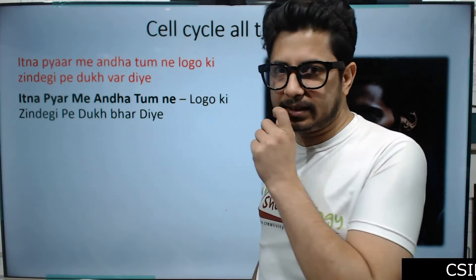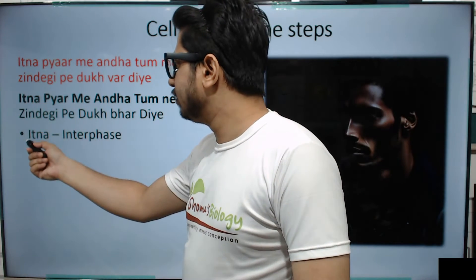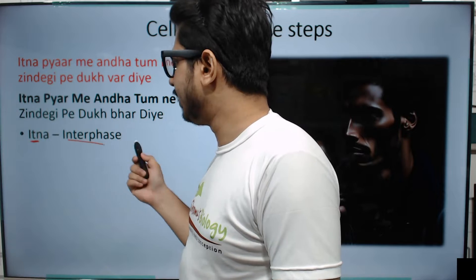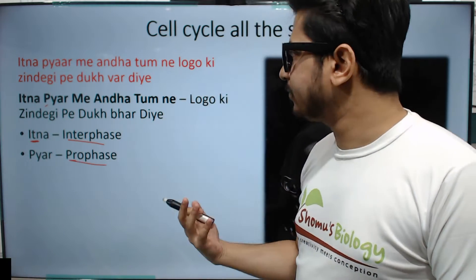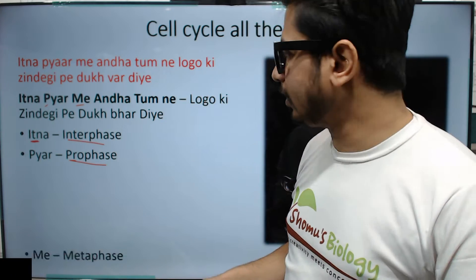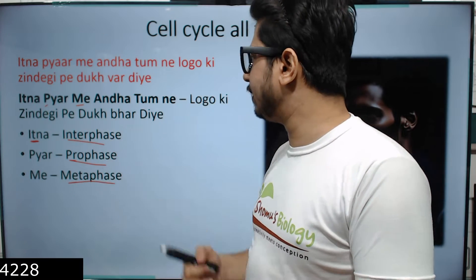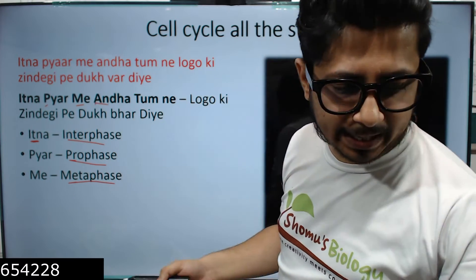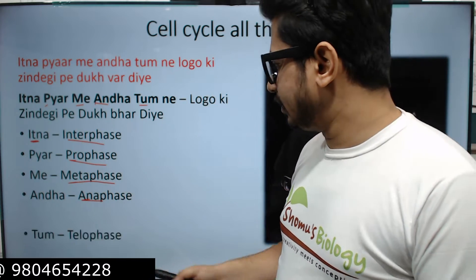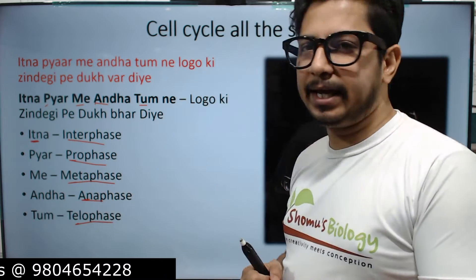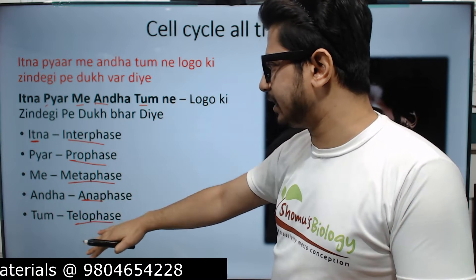The first section — 'Itna pyaar mein andha tunne': I for Interphase, P for Prophase, M-E for Metaphase, AN for Anaphase, and T for Telophase. So you have Interphase, Prophase, Metaphase, Anaphase, and Telophase — all the different phases of mitosis cell division.